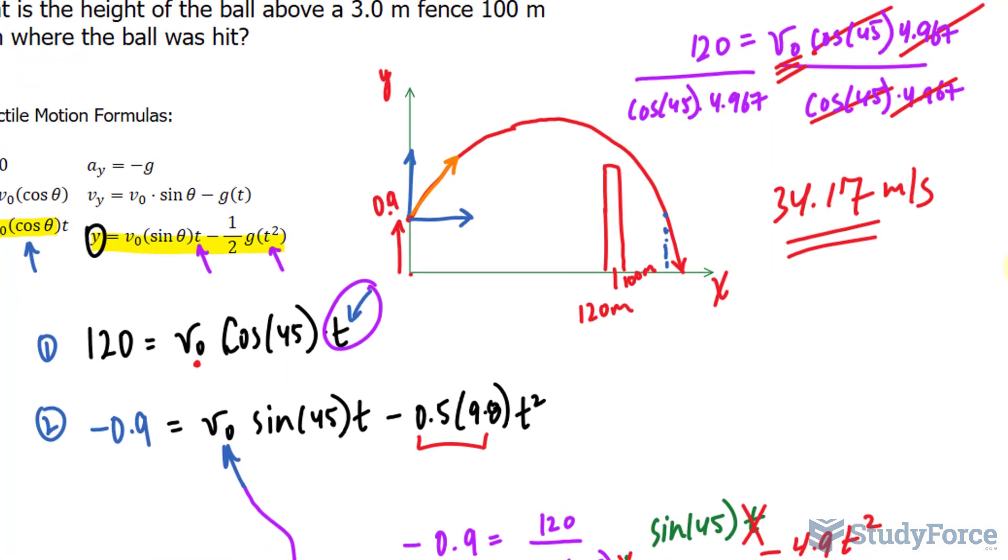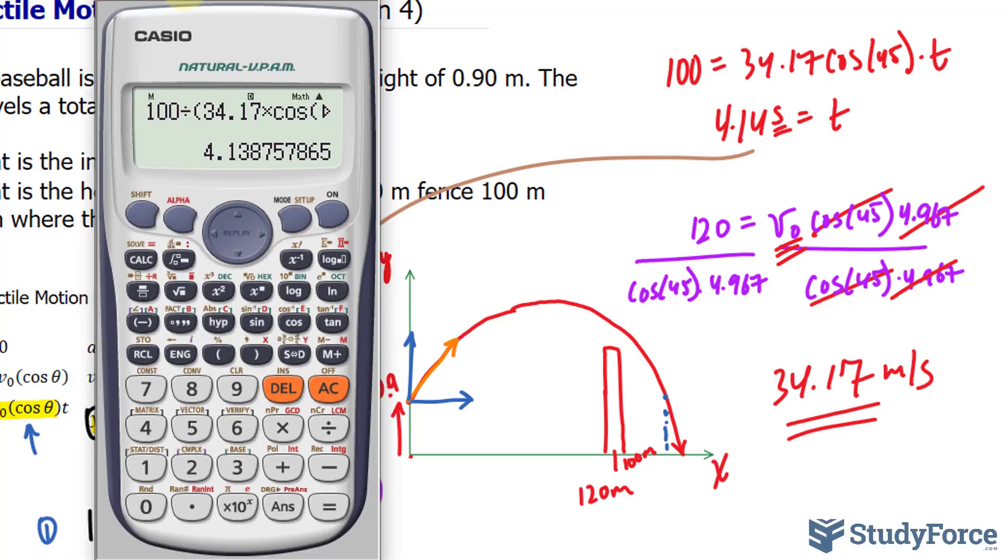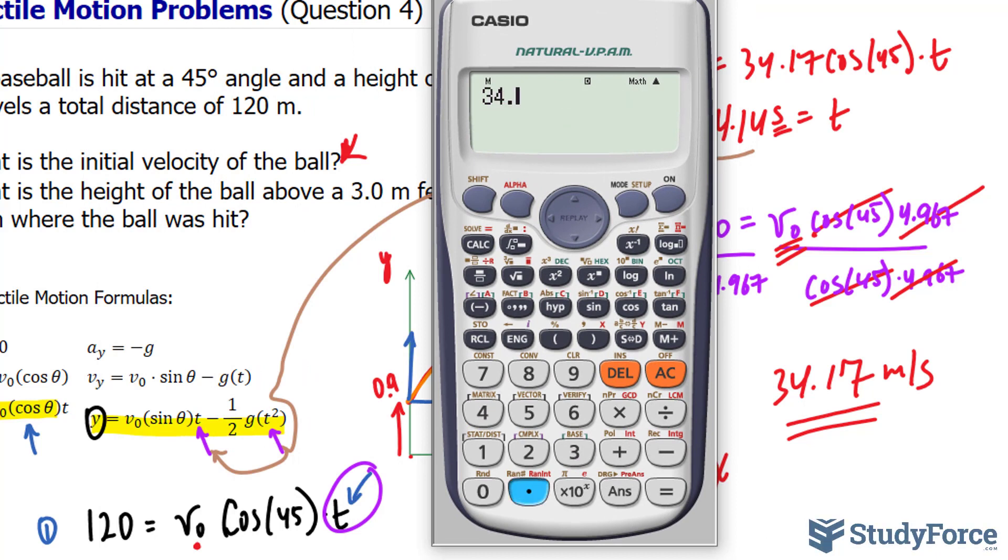Now, what I can do is use this formula to find out the height. So, I'll take the time value and throw it into here and here. Let's use our calculator for this, I don't need to write it down anymore. So, I have 34.17 times sine at an angle of 45 times the time we found of 4.14. That's this part. Now, we have minus 0.5 times 9.8 and in brackets 4.14 raised to the power of 2. We get a value of 15.95.